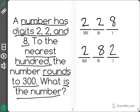When you're rounding to the nearest hundred you look at the digit in the tens place to determine whether to round up or down.